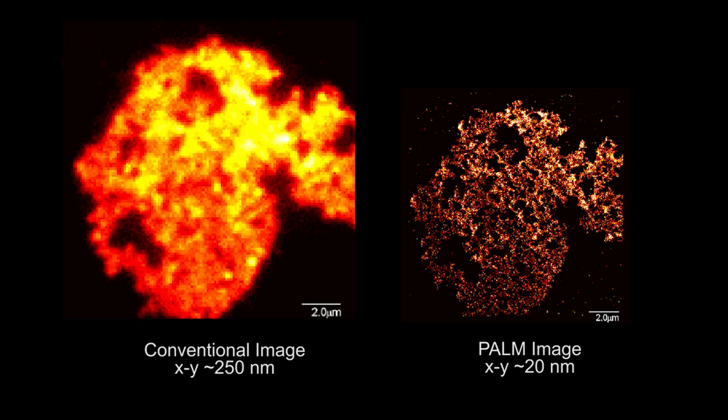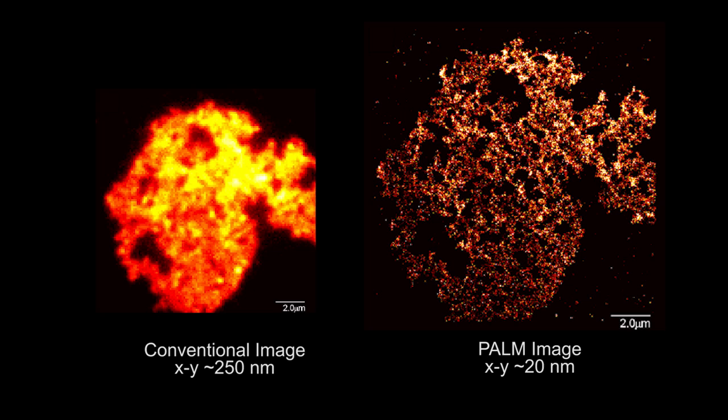To the right is a PALM image. PALM is photoactivated localization microscopy, which uses photoactivatable fluorescent proteins to determine, with very high precision, the position of individual molecules. That allows you to get much greater resolution. In this case, we have an XY resolution of about 20 nanometers — about a tenfold improvement.